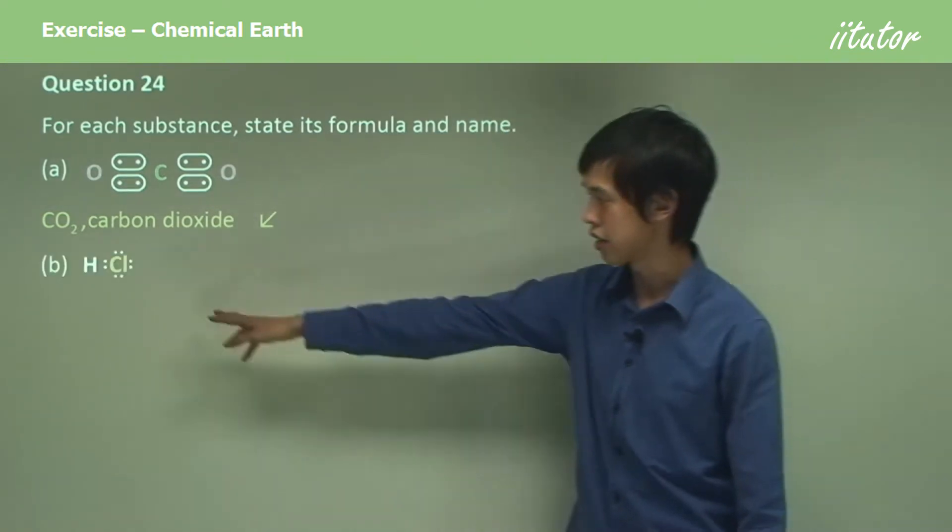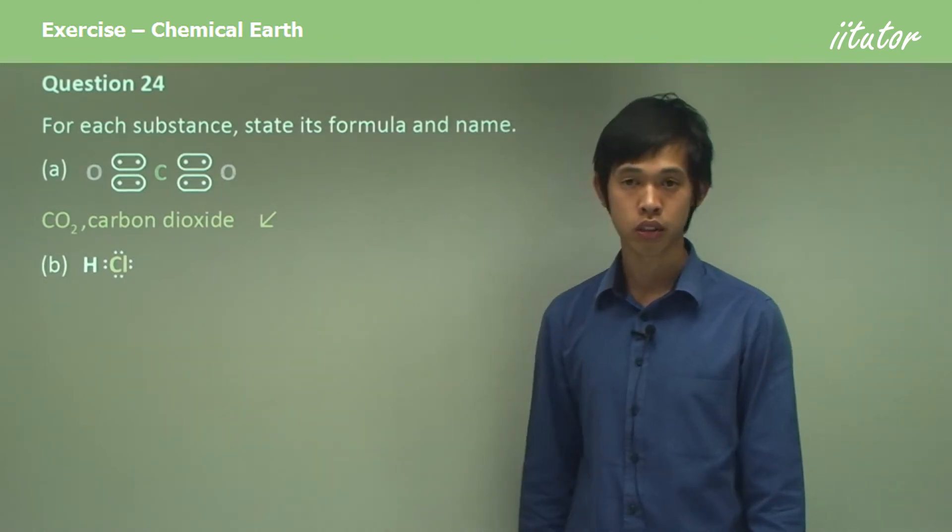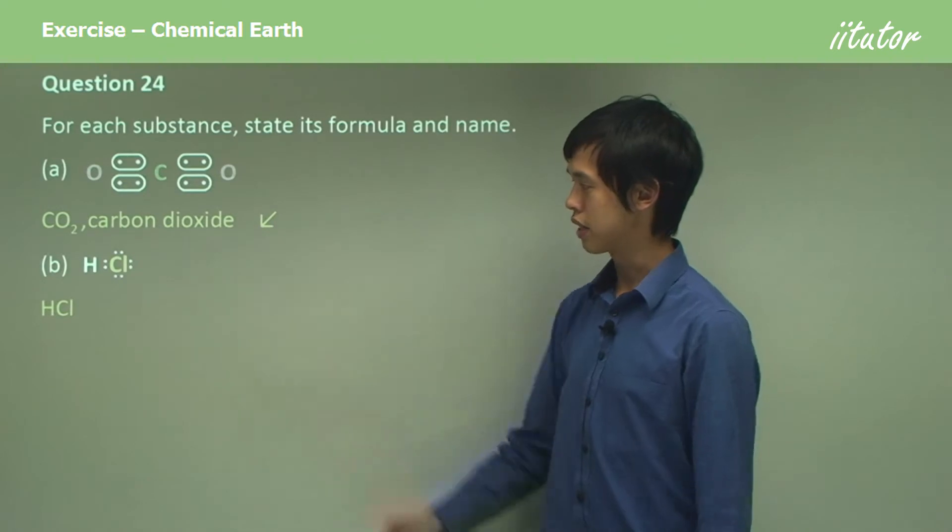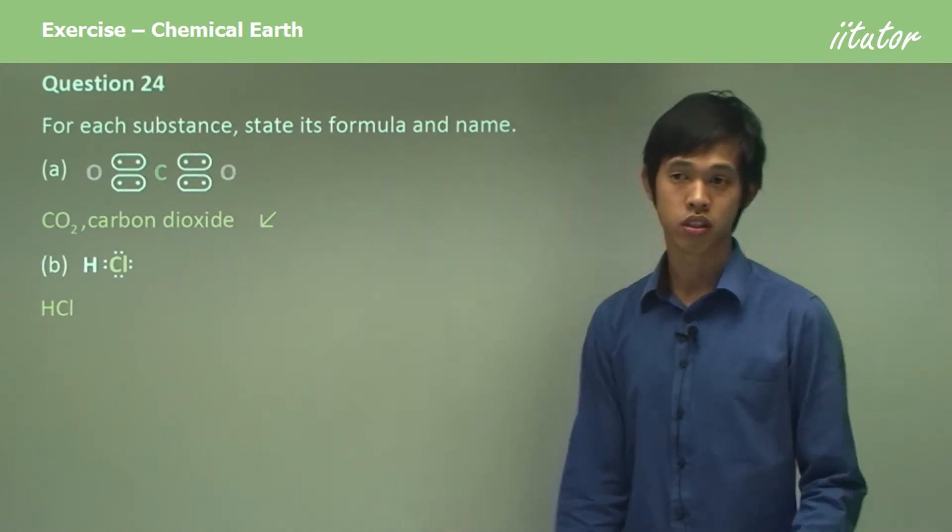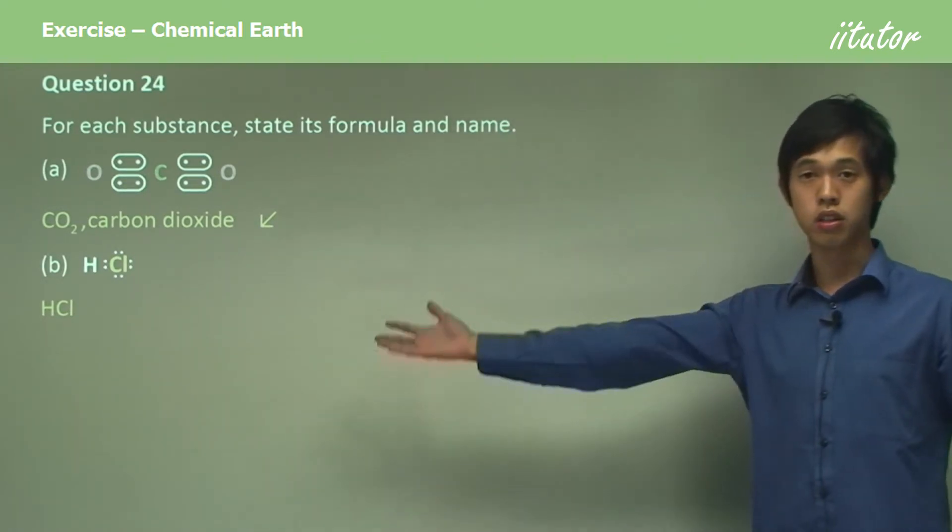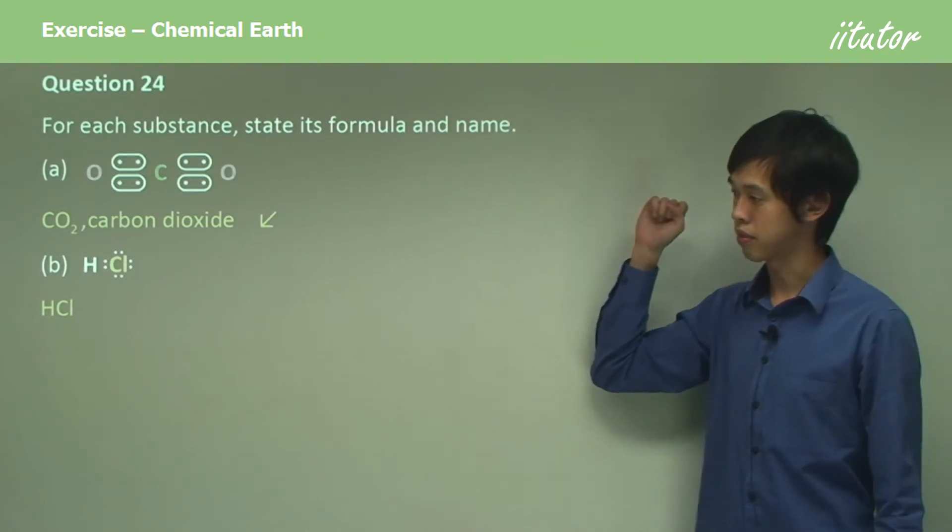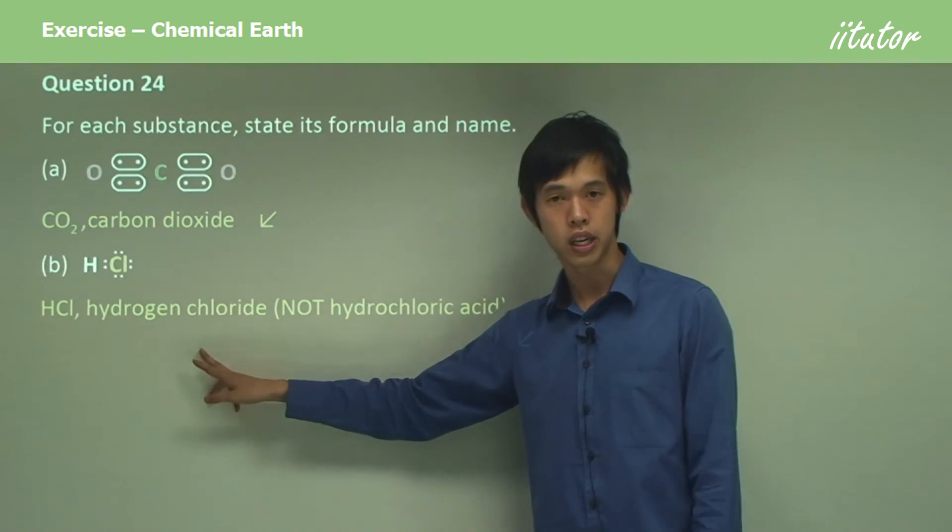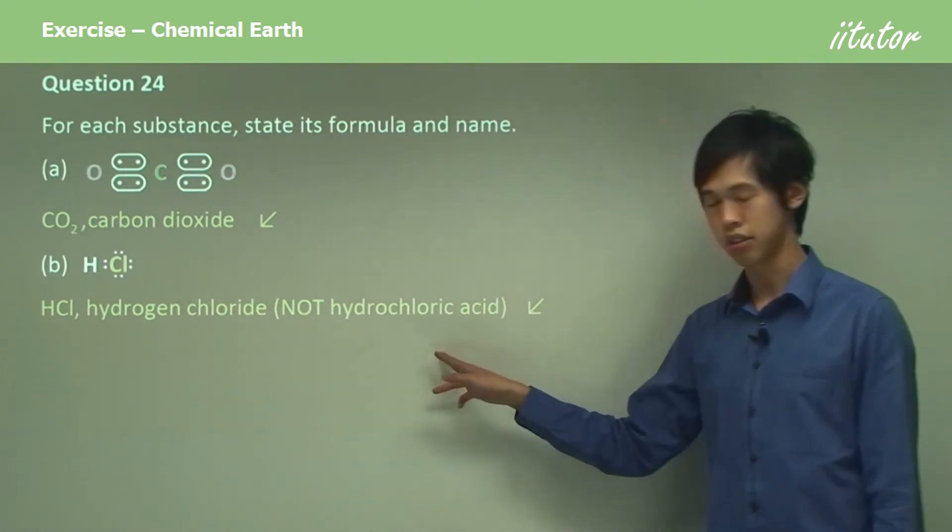Okay, what about this one, HCl? So what is its formula? Well, its formula is going to be HCl, fairly straightforward. But its name is the tricky part. You usually call that hydrochloric acid, but this molecule is actually called hydrogen chloride, not hydrochloric acid.